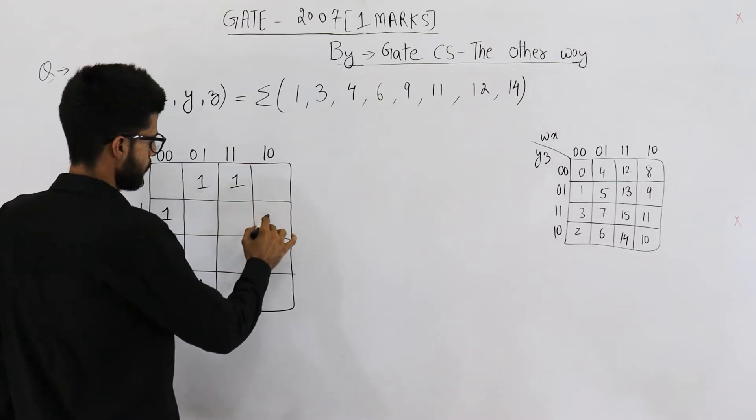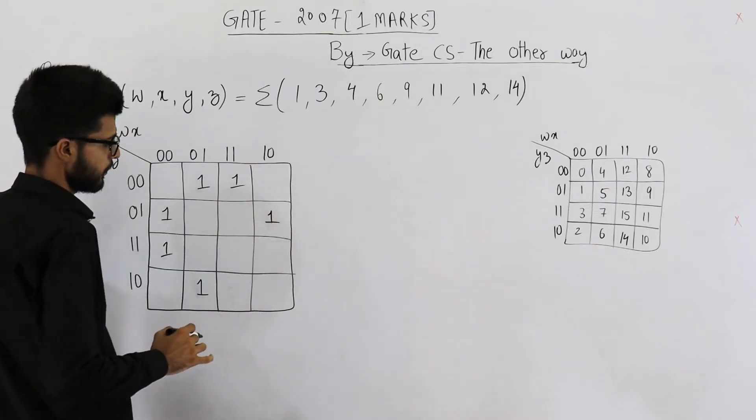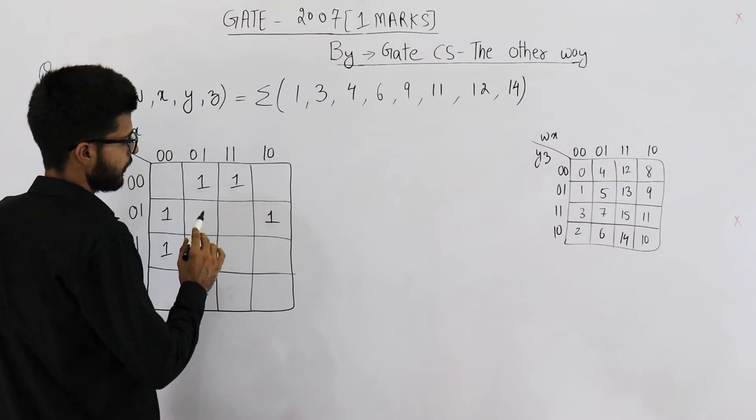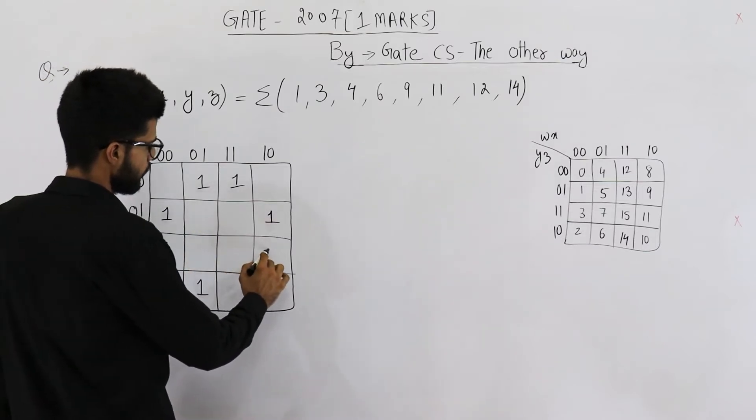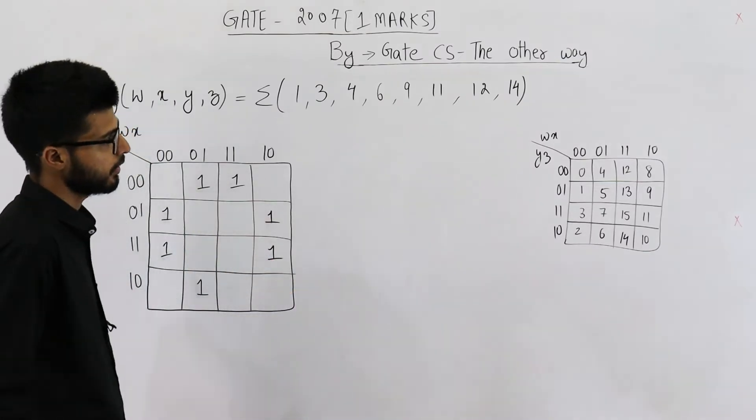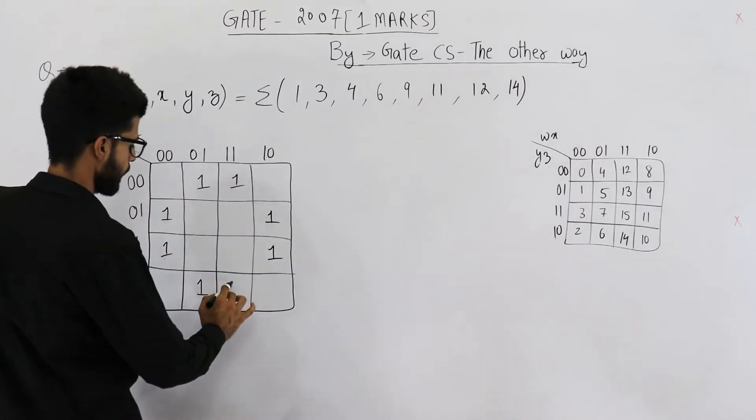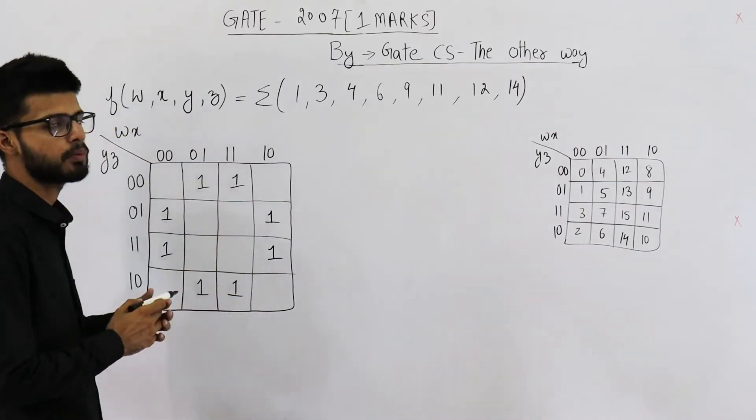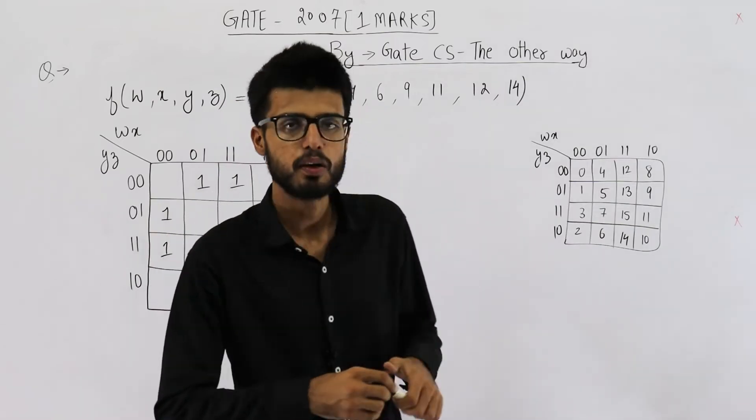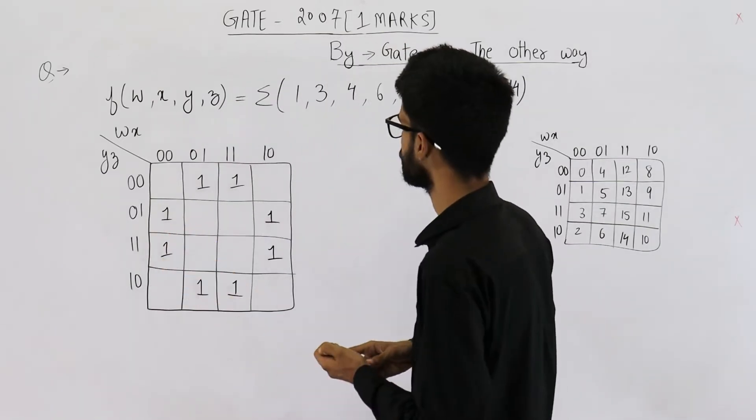9 will be here. 11 will be here. And the last one is 14. So these are all the minterms. That means function will have a value 1 at all these places.